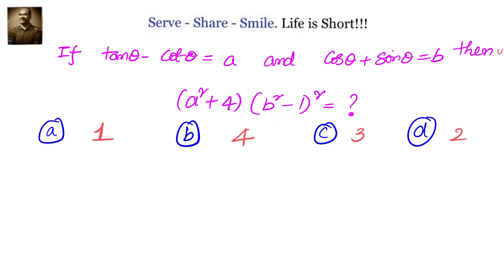If tan θ minus cot θ equals a, and cos θ plus sin θ equals b, what is the value of a² plus 4 multiplied with (b² minus 1) whole square? Let's go ahead and first substitute the a and b values whatever is given to us and see what we can do here.